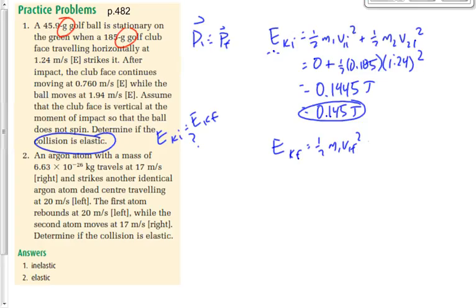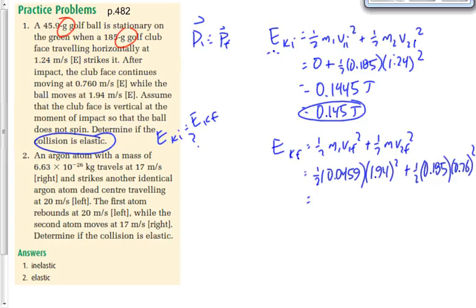EKF: 1/2 M1 V1F squared plus 1/2 M2 V2F squared. M1, 0.0459. Be careful with that. Be careful that you don't make that 0.459. That would be an easy thing to do. Divided by 1,000, not 100. Afterwards, the ball is moving at 1.94. The club is 0.185 and it's moving afterwards at 0.76. What do we get for that one?